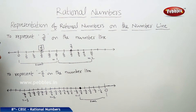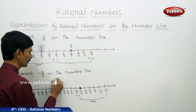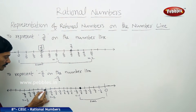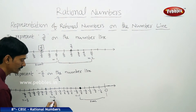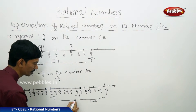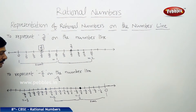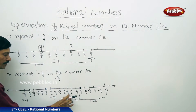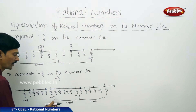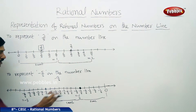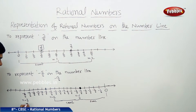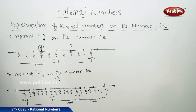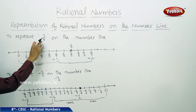From minus 1 to minus 2, this unit is also divided into 6 equal parts, and from minus 2 to minus 3 is also divided into 6 equal parts. To represent any rational number on the number line, first you have to observe the denominator.